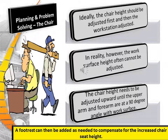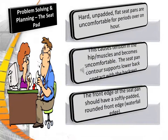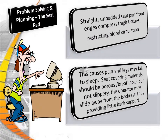Ideally, the chair height should be adjusted first and then the workstation adjusted. In reality, the work surface height often cannot be adjusted, so the chair height needs to be adjusted upward until the upper arm and forearm are at a 90-degree angle with the work surface. A footrest can be added as needed to compensate for increased chair seat height. Hard, unpadded, flat seat pans are uncomfortable for periods of an hour, causing tension in the hip and muscles. The seat pan contour supports lower back contact with the backrest. The front edge of the seat pan should have a softly padded rounded waterfall edge, as straight unpadded front edges compress thigh tissues restricting blood circulation, causing pain and legs may fall asleep.